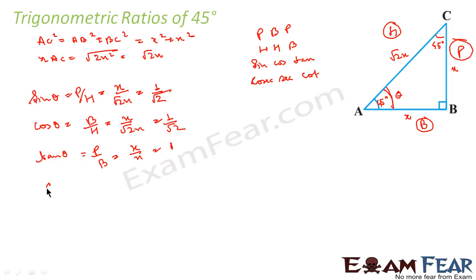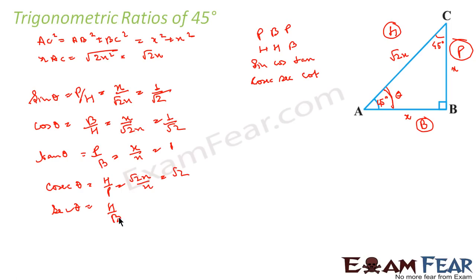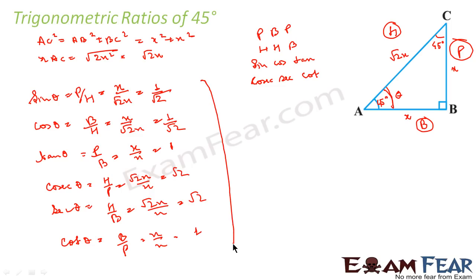Similarly, cosec θ = H/P = (√2·x)/x = √2. Sec θ = H/B = (√2·x)/x = √2. And cot θ = B/P = x/x = 1. All these values are for θ = 45 degrees. So sin 45 = 1/√2, cos 45 = 1/√2, tan 45 = 1, cosec 45 = √2, sec 45 = √2, and cot 45 = 1.